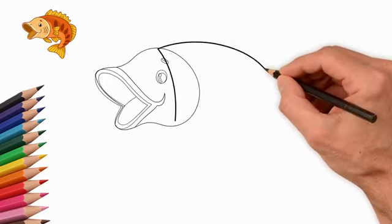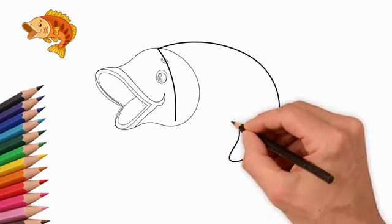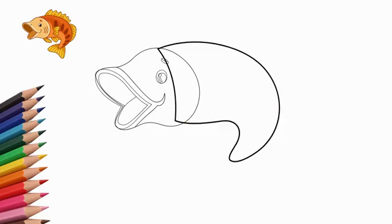Next, draw the body of the fish. Fish swim. The body of the fish is bent.